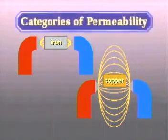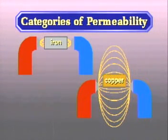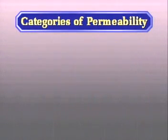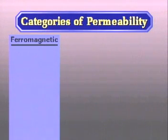A system has been devised to classify all materials into one of three categories of permeability. Materials that are highly magnetic are called ferromagnetic, derived from the Latin word ferrum, which means containing iron.